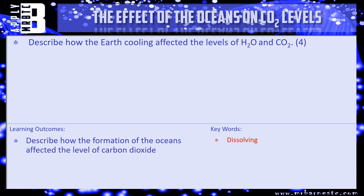Let's see what the examiner can ask you. There's one question here: describe how the Earth cooling affected the levels of H2O and CO2. It's worth four marks, so you need to say four specific points. Pause the video, have a go, and we'll see how you've done in a minute.